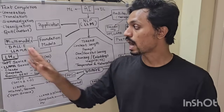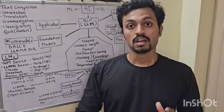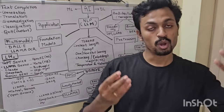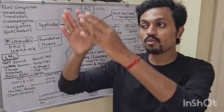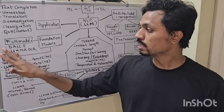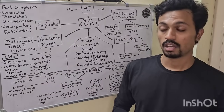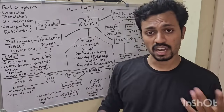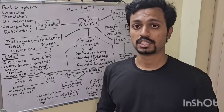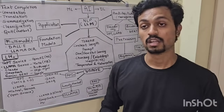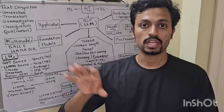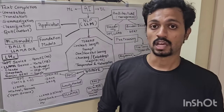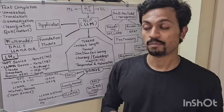If you want to generate an answer from your image, you can use multimodal models. A classic example is DALL-E — if you give a text query describing a scene, it can generate an image from that query. Then there's Llama OCR — OCR means Optical Character Recognition — which can process text from images.